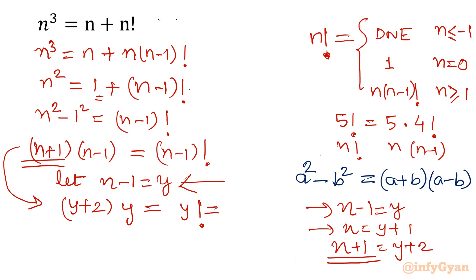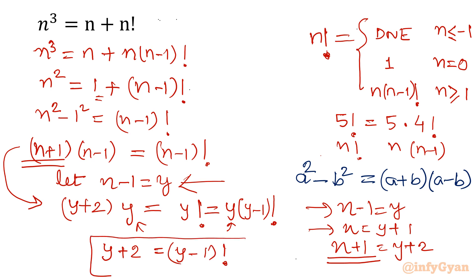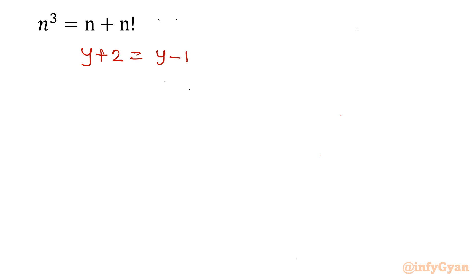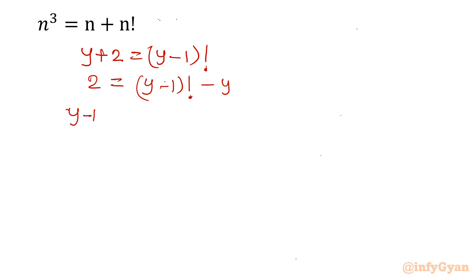Dividing both sides by y gives y plus 2 equals (y-1) factorial. This is a very important equation. Now subtract y from both sides, so (y-1) factorial minus y equals 2.